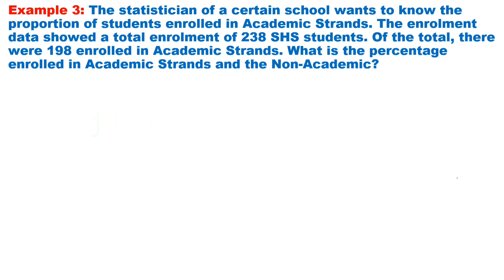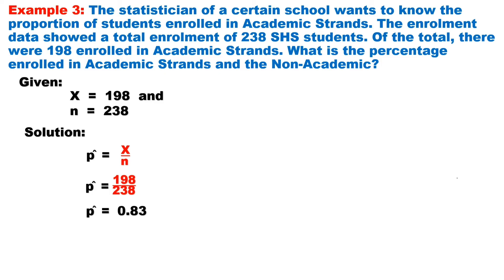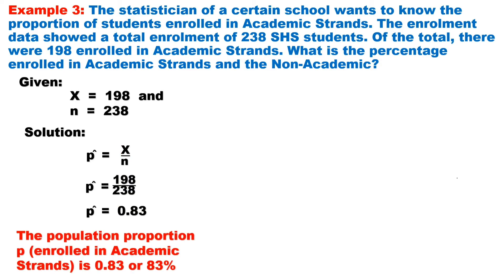Third and last problem for this video: a statistician of a certain school wants to know the proportion of students enrolled in academic strands. The enrollment data showed a total enrollment of 238 senior high school students, of which 198 were enrolled in academic strands. What is the percentage enrolled in academic strands, and for the non-academic? Our givens are X equals 198 and N equals 238. Substituting on the formula, P-hat equals 198 over 238. Simplifying: 198 divided by 238 equals 0.83. It means that the population proportion P for students enrolled in academic strands is 0.83 or 83%.